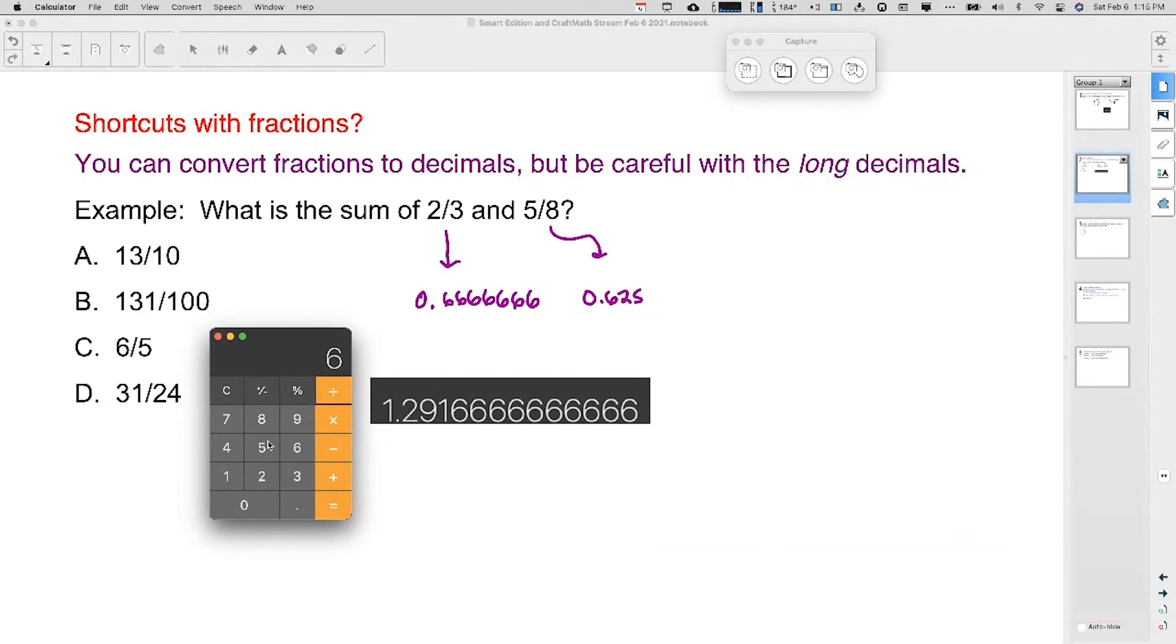Let's try six divided by five. That's 1.2. So right now you're thinking it's still going to be 13 over 10, but check this one out. Check out this last one: 31 divided by 24.